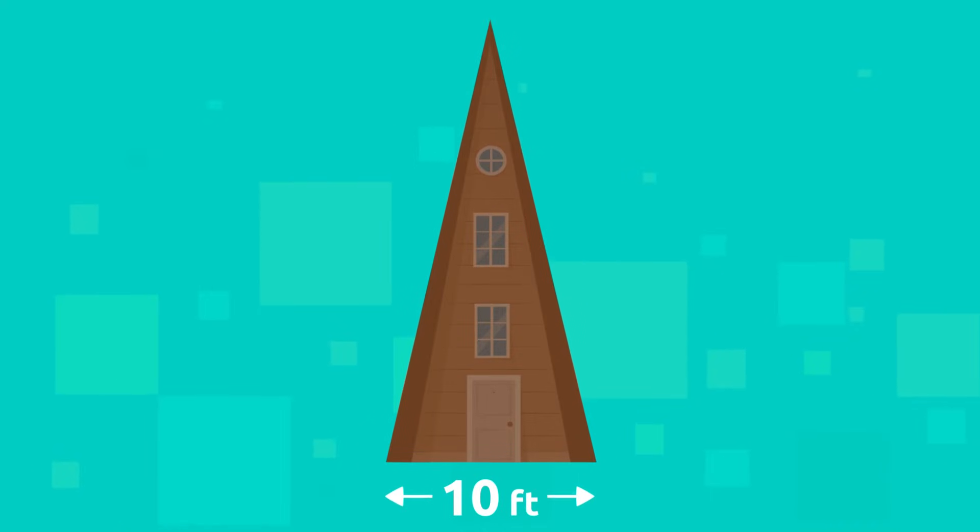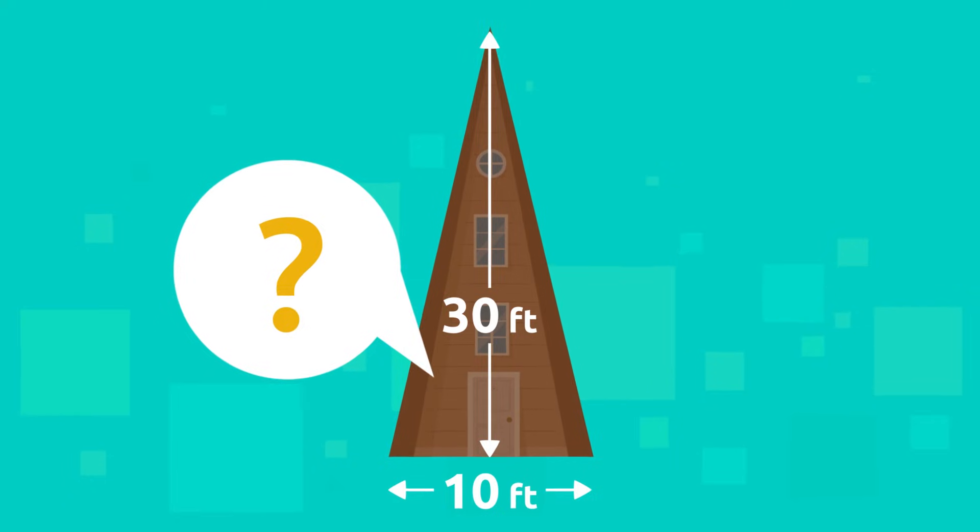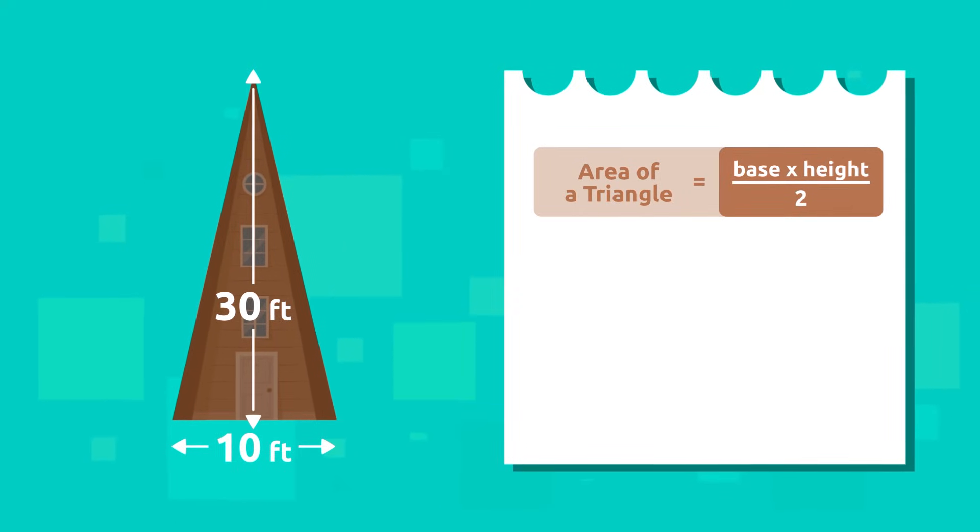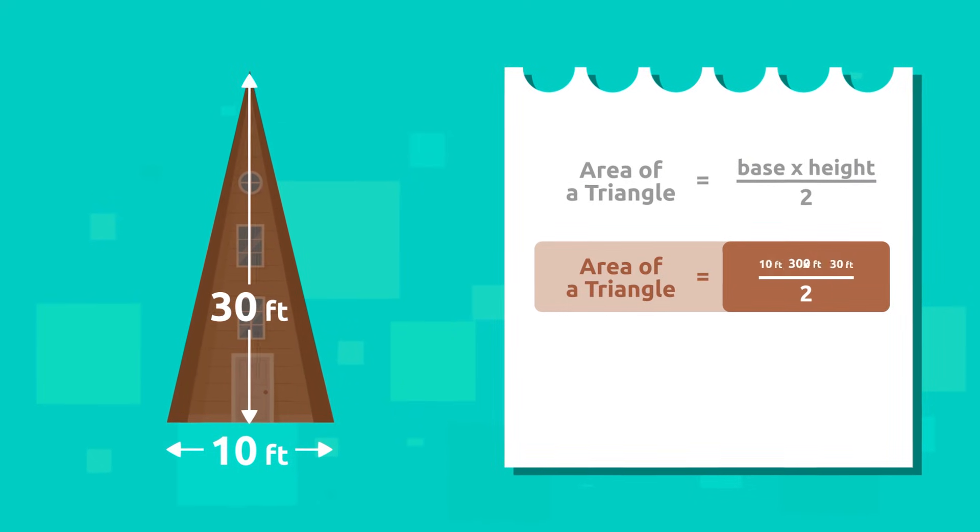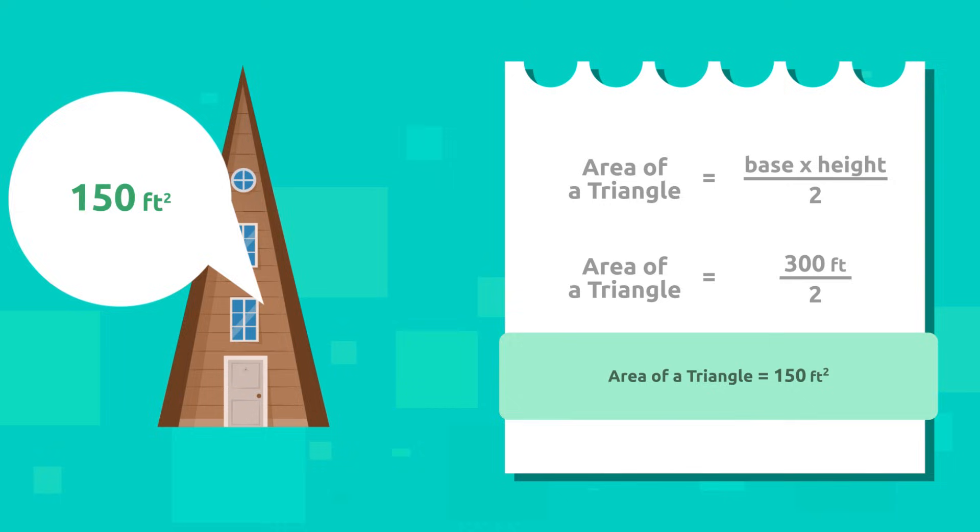If the base is 10 feet and the height is 30 feet, what is the total area? Remember that we must multiply the base by the height and divide by two. Let's see: 10 times 30 equals 300, and 300 divided by 2 equals 150.